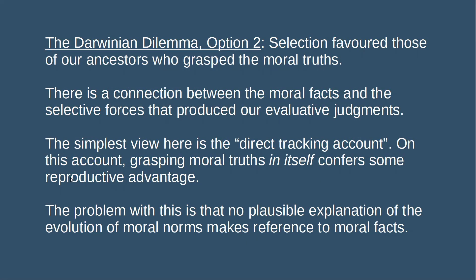Let's turn to the second horn of Street's dilemma. Here the realist will claim that there is a relation between the evolutionary influences on our moral beliefs and the stance-independent moral truths. In particular, natural selection favoured those of our ancestors who were able to grasp the moral truths. It's not that we were just by chance selected to have generally correct moral beliefs. There's some connection between the moral facts on the one hand and the selective forces that produced our basic evaluative judgments on the other. The first and simplest way to take this option is to hold that the ability to grasp moral truths in itself confers a reproductive advantage — detecting moral truths is somehow advantageous just in itself. We can call this the direct tracking account.